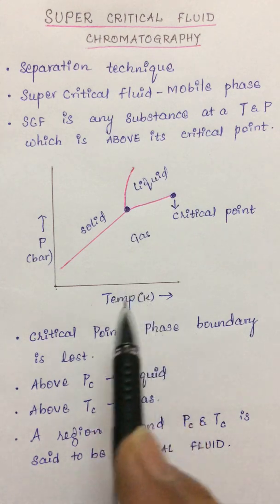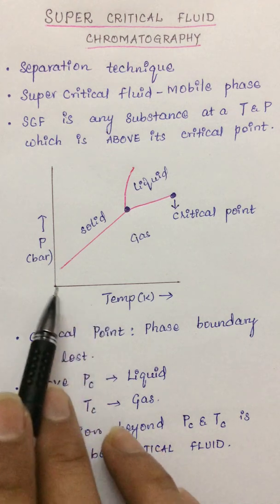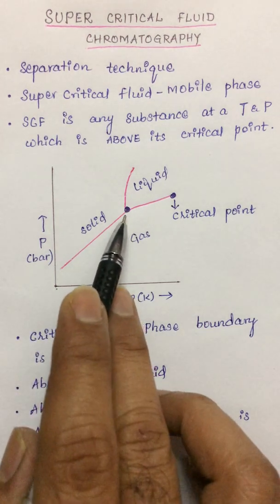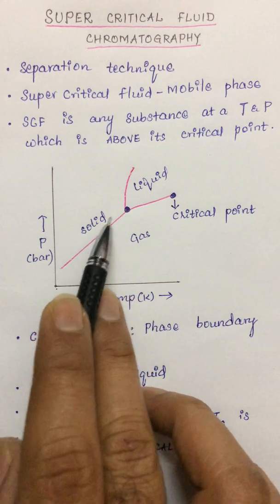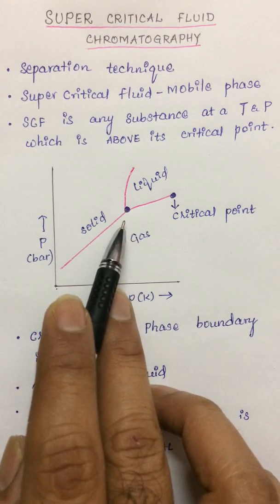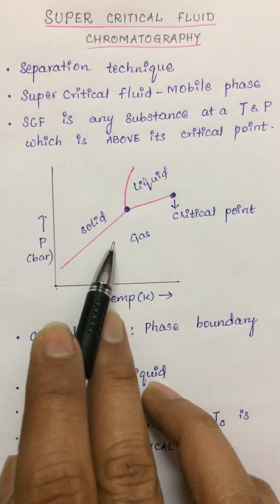To understand the critical point, let's look at the phase diagram between pressure taken in bar and temperature taken in Kelvin. There is a point called as a triple point where the solid, liquid, and gas all three phases can coexist. At any point over this line, the solid and gas exist in thermodynamic equilibrium.